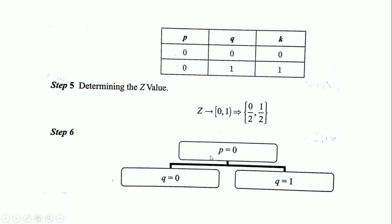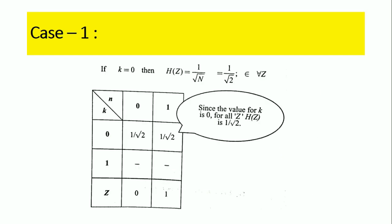In step 6, with p equals 0 and q equal to either 0 or 1, we consider different cases. Case one: if k equals 0, then h(z) equals 1/√N. Since N equals 2, we get h(z) equals 1/√2 for all values of z.